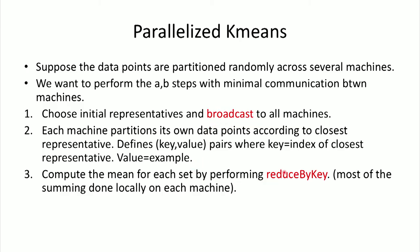And that reduce by key will give you the new means, which are the new representatives. So the reduce by key will basically give you one vector for each one of the k centers, and then those k centers will be distributed to all of the machines for the next iteration.